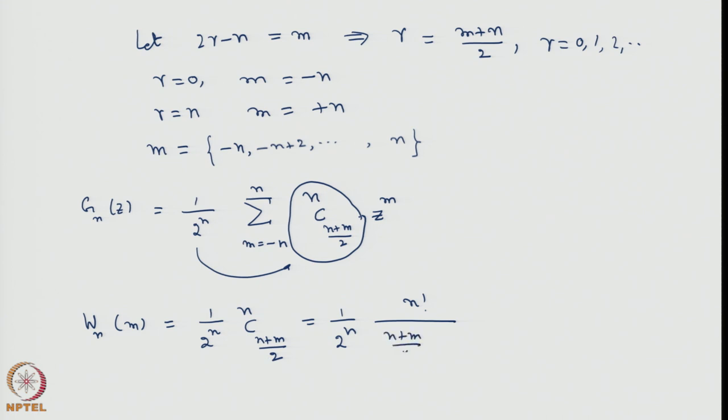W_n(m) will therefore be 1 by 2 to the power n nC_{(n+m)/2}, which you can write in more explicit form as 2 to the power n, n factorial into r factorial. This is r factorial, which means (n+m)/2 factorial multiplied by n minus r, which will come out to be (n-m)/2 factorial. And we have already noted that n and m have a symmetry relationship. If n is even, m is even and if n is odd, m is odd. So this brings us to the end of derivation of the expression for the occupancy probability for the problem of symmetric random walk.